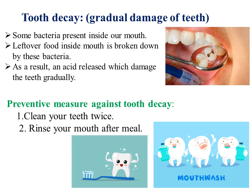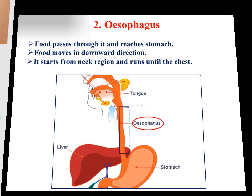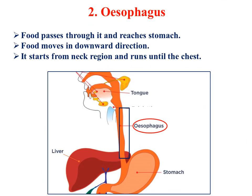Next is the esophagus. The swallowed food passes into the food pipe or esophagus. The food pipe runs along the neck and chest, and food is pushed down by the movement of the wall of the food pipe. This movement takes place throughout the alimentary canal and pushes the food downwards.